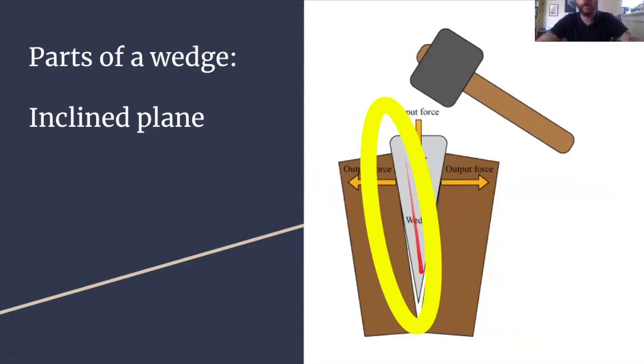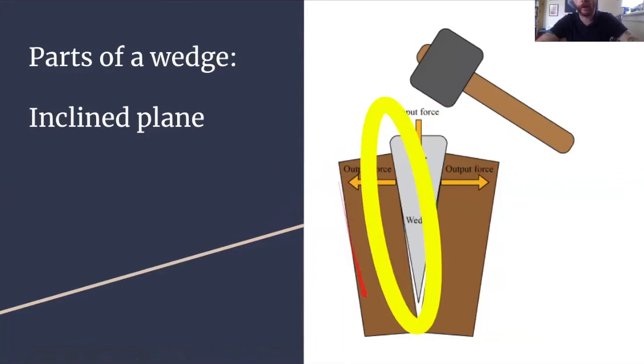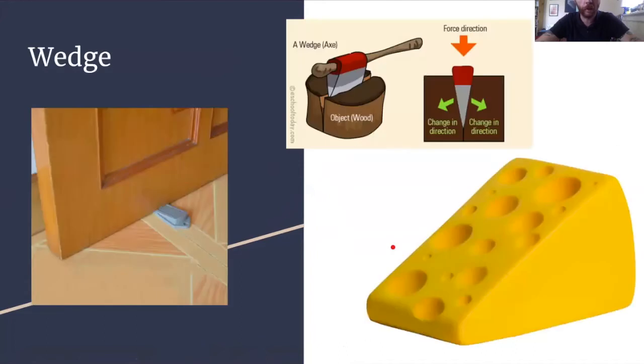So that's the wedge. It consists of two inclined planes. As the force of the wedge goes one direction, the load goes either direction away from the wedge. In this case, the load are these brown rectangles, which are probably supposed to be wood. The axe is splitting the piece of wood, so the wood is the load that moves in the direction away from the wedge.